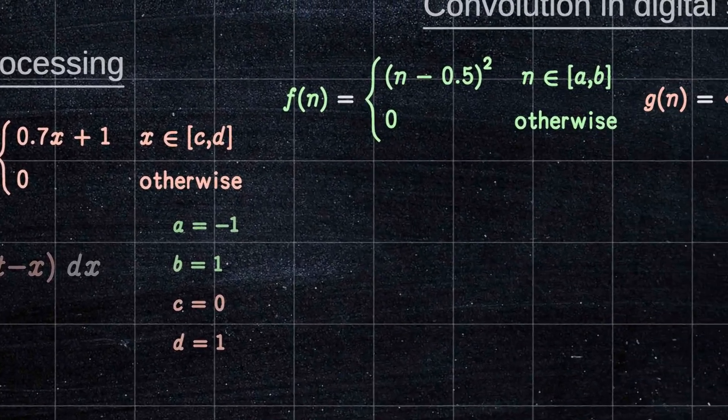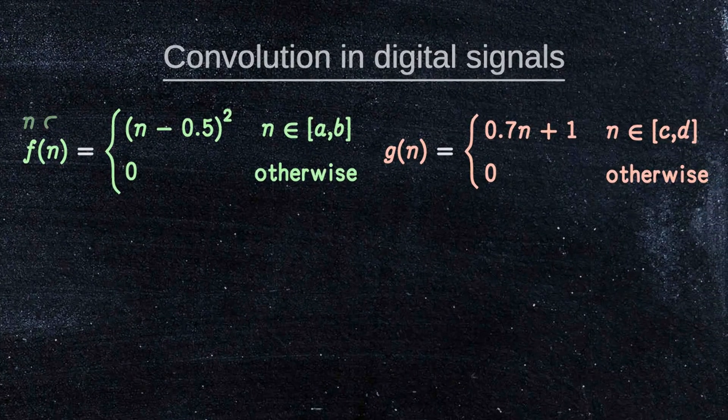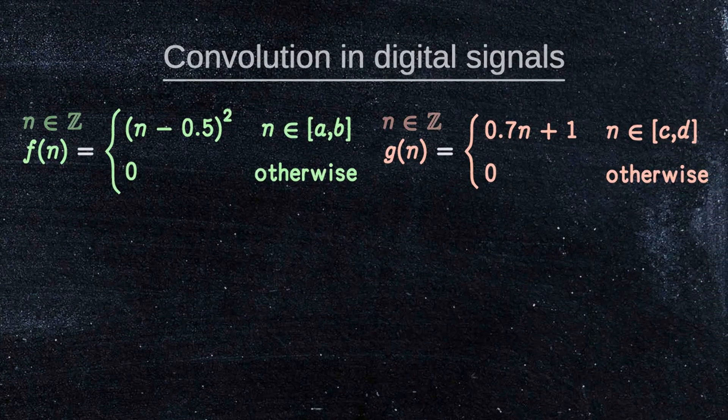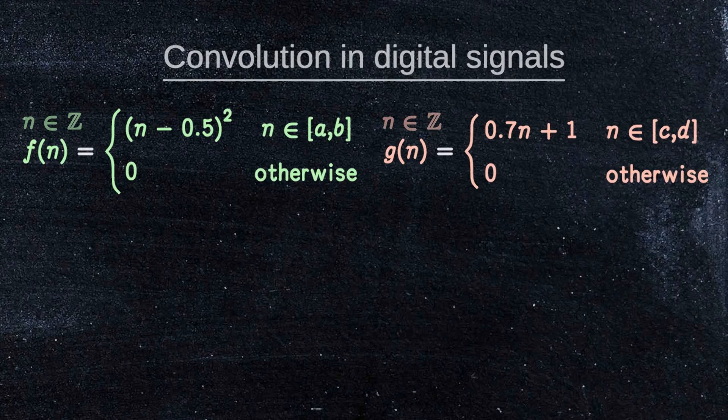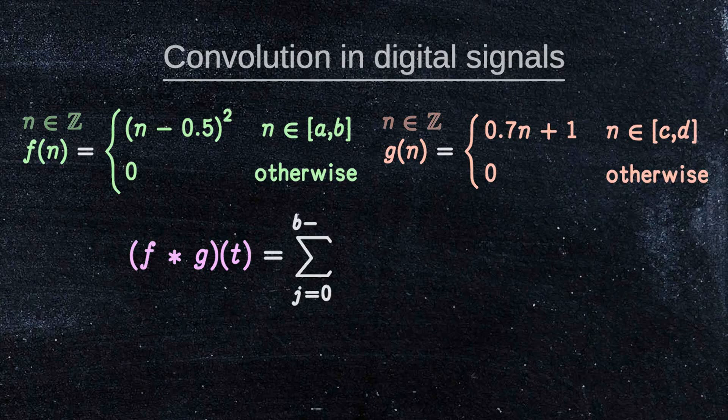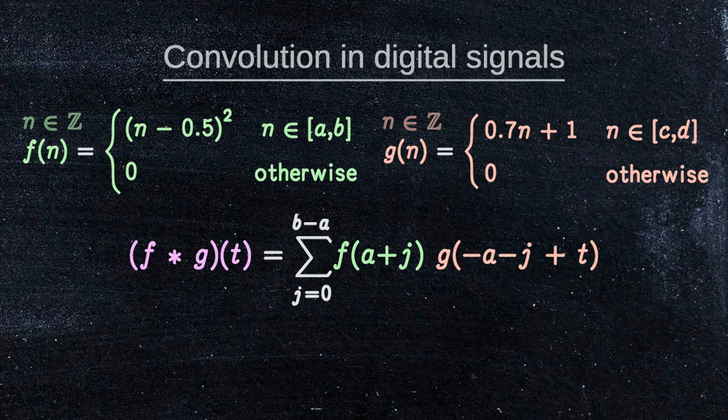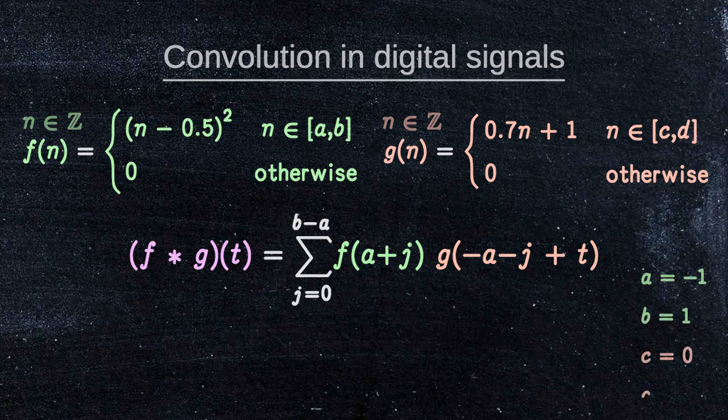Now suppose that f and g are discrete functions. Since the discrete equivalent of integration is summation, the convolution of f and g can be written as a sum of products. If we assign the following values for example, this is what we get.